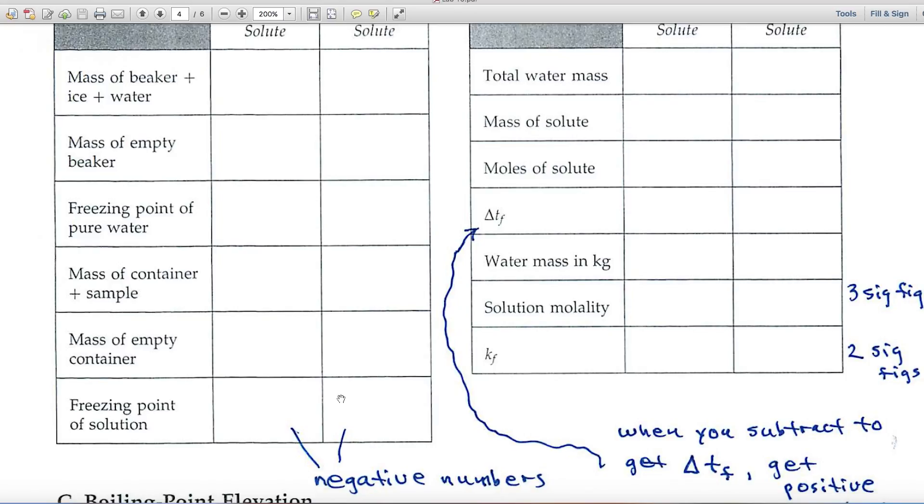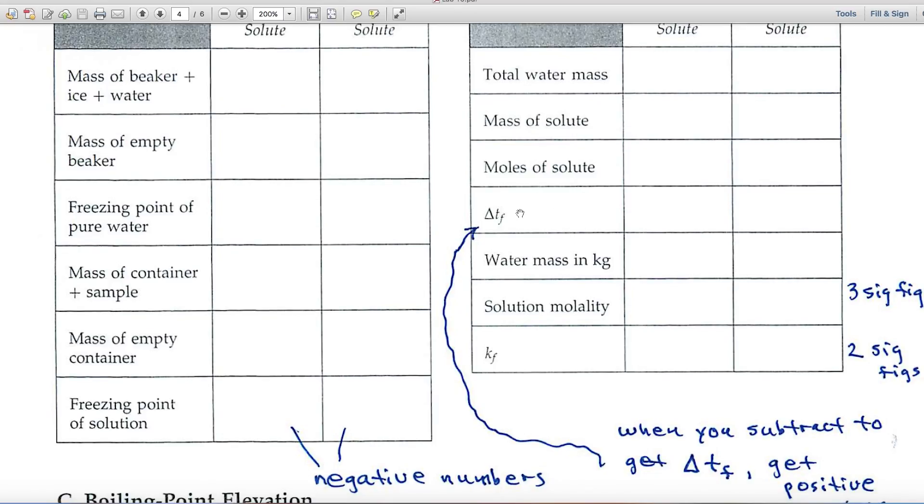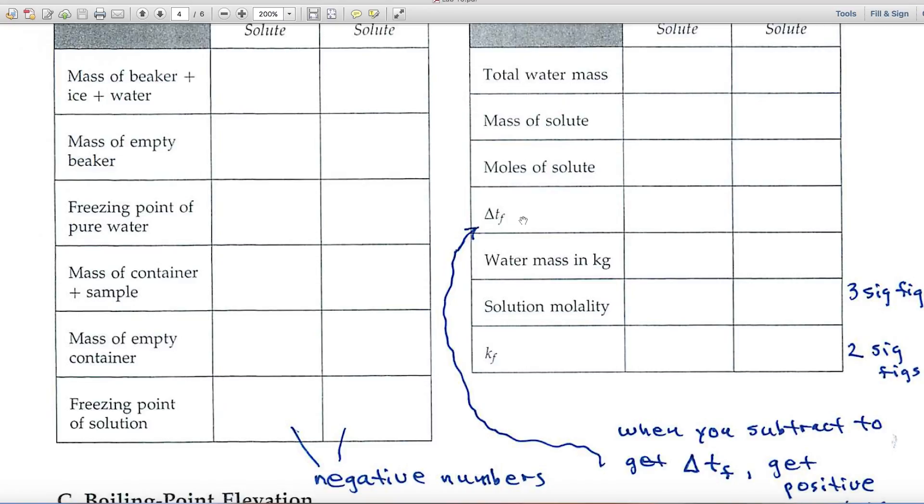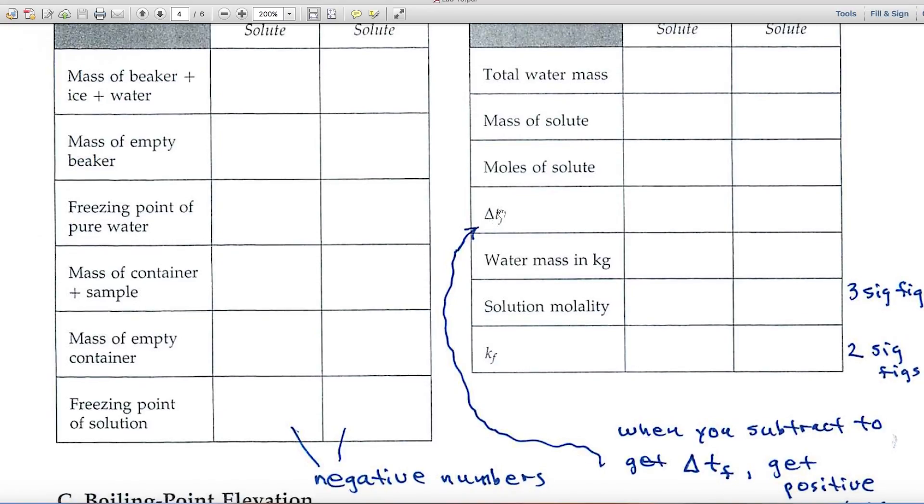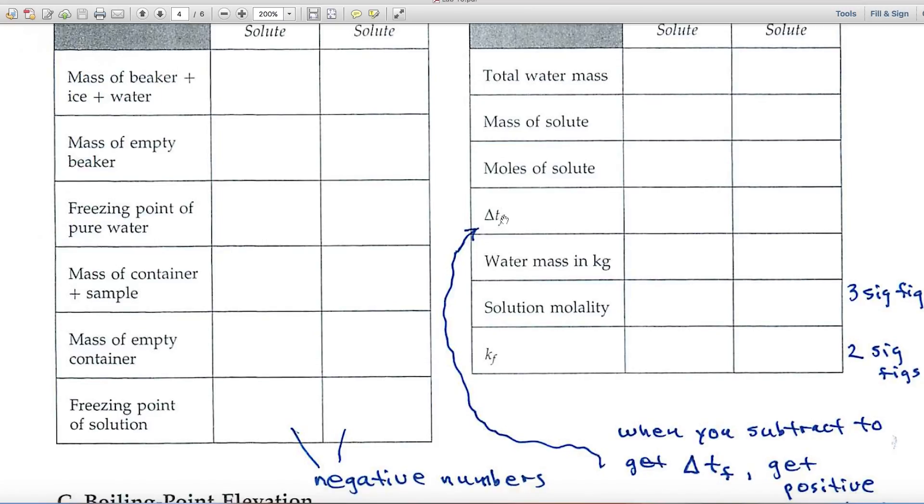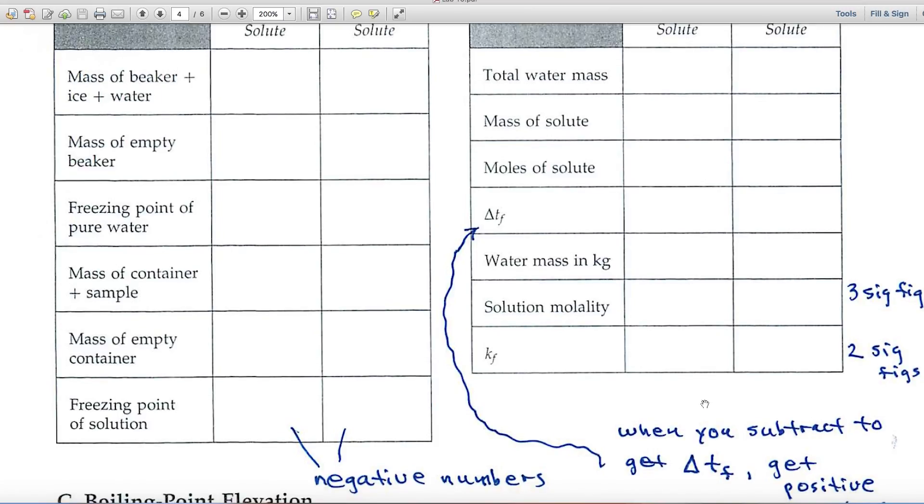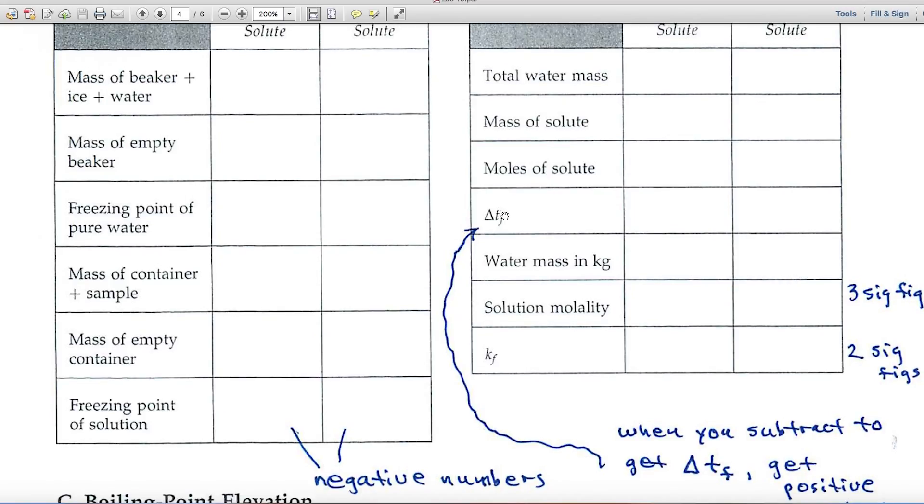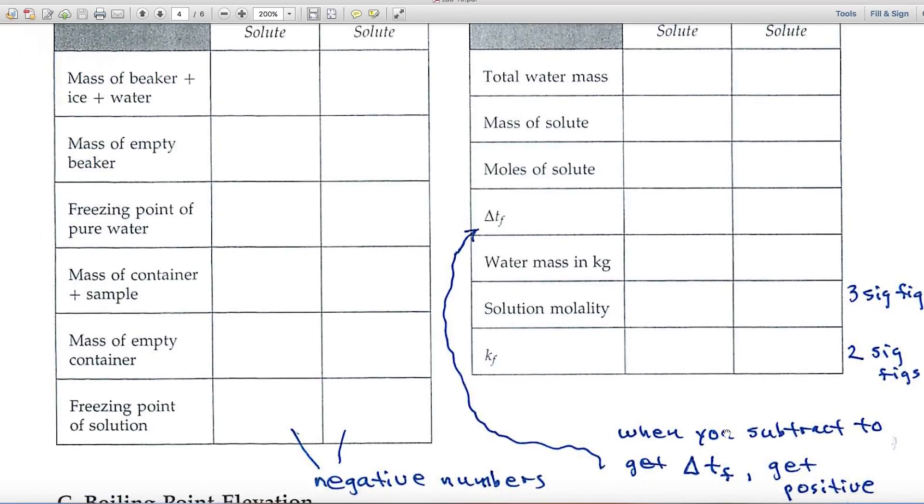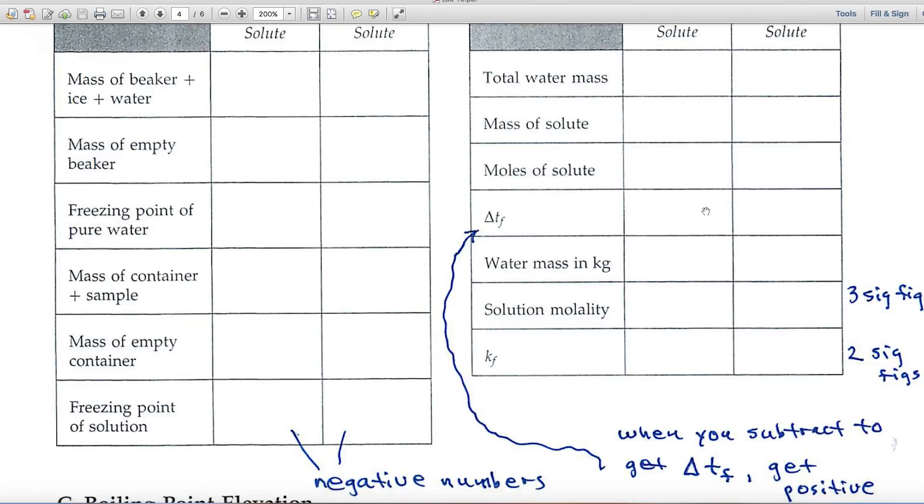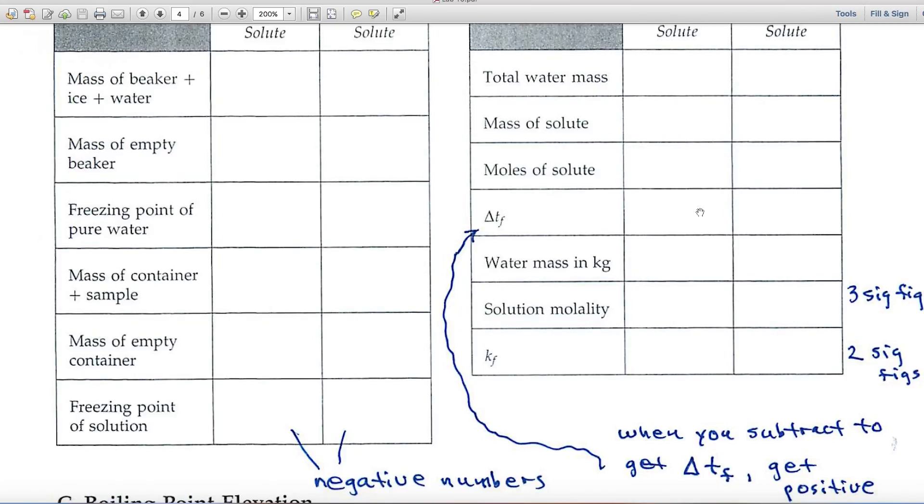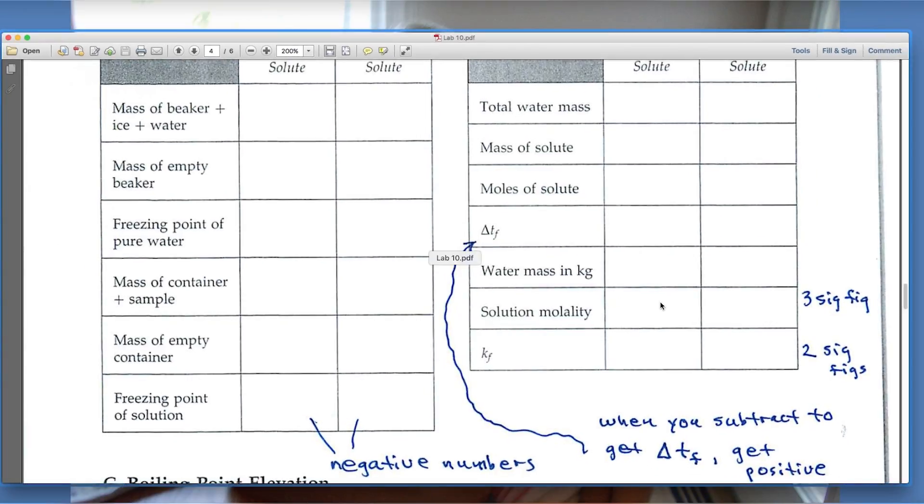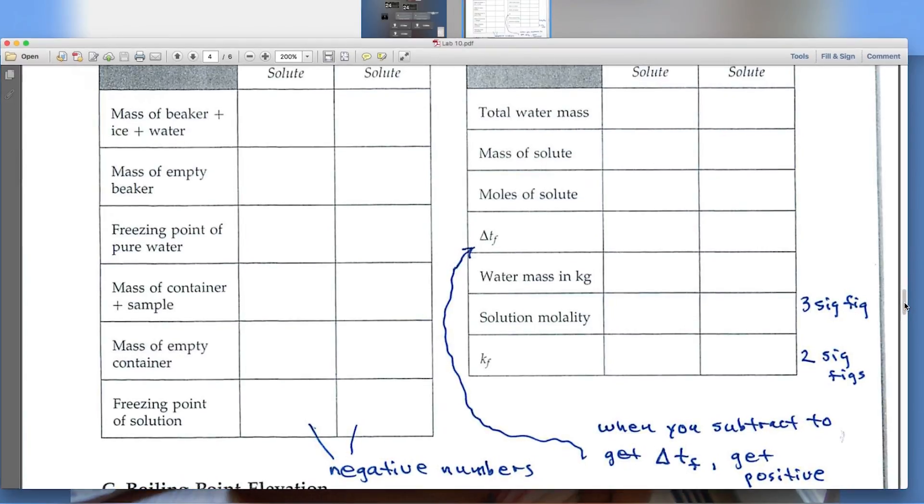And that's sort of important, because over on this side, when you're doing the report, and you calculate delta T sub f, delta means the change, the change in the freezing point temperature. When you subtract, you'll get a positive number. So zero minus a minus would give you a positive number. So in these two spaces, you'll have positive numbers. Solution molality, you'll record using three significant figures. And the Kf value, you'll have two significant figures there. So that should help you.